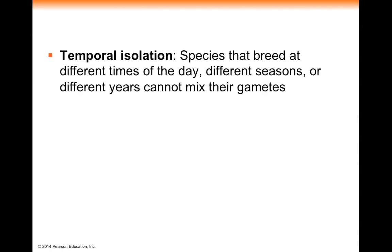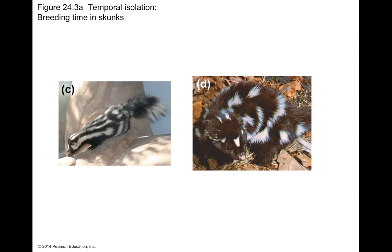Temporal isolation can occur at many scales — day versus night mating, winter versus spring mating, or even a 13-year cicada versus a 17-year cicada. With these skunks, it has to do with the season of the year: winter-breeding skunks and summer-breeding skunks are not fertile at the same time, so they cannot produce fertile, viable offspring.